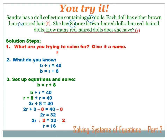Third step: set up some equations and try to solve. We know that the number of brown-haired dolls equals the number of red-haired dolls plus eight — B equals R plus eight. The second expression was B plus R equals 40. We know what B equals from up here: B equals R plus eight. So we can substitute R plus eight for B and rewrite: R plus eight plus R equals 40. The hard part is setting these up — the solutions aren't that difficult.